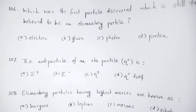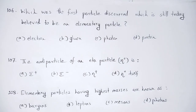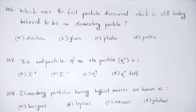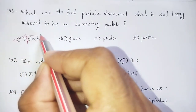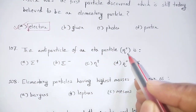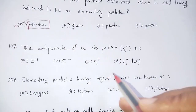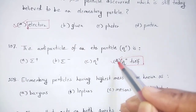Question number 106: Which was the first particle discovered that is still believed to be an elementary particle? The answer is the electron. Option: electron. The eta particle (eta zero) is an atomic particle — that is the name of eta naught, eta zero, option number D.